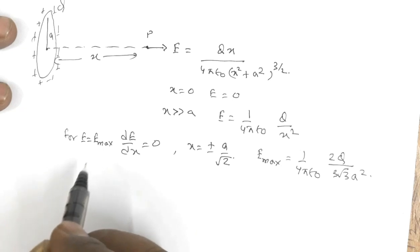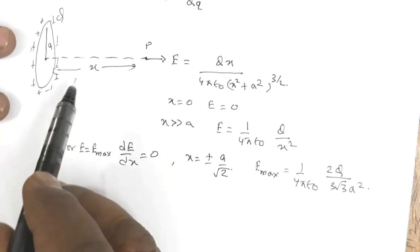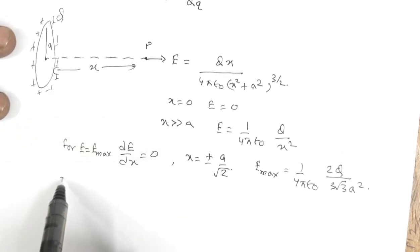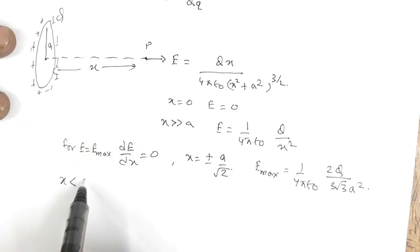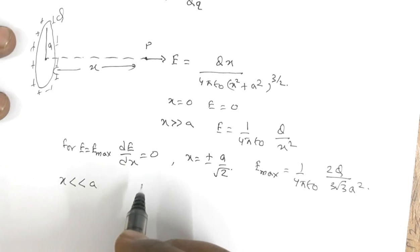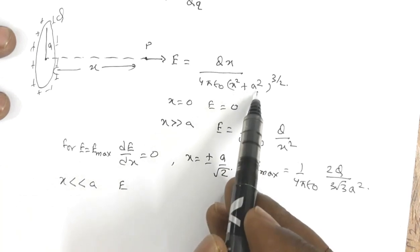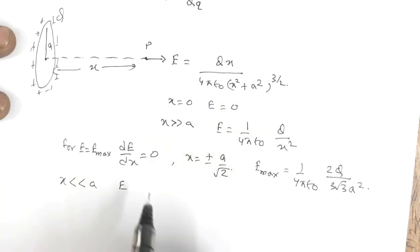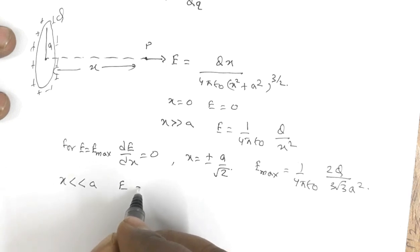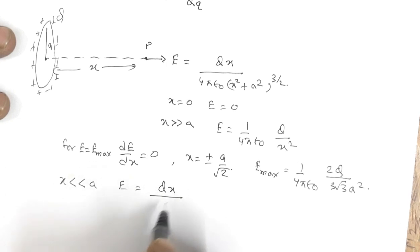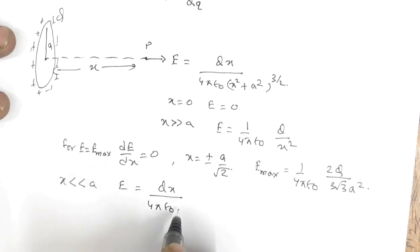Now if you are very close to the ring — when x << a — then x² + a² becomes a², so E = Qx / (4πε₀a³).